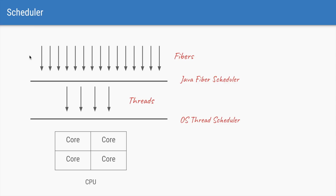Using this approach, we can have a huge number of Java Fibers that are very lightweight. It is the responsibility of the Java Fiber scheduler to find a free thread and mount a particular fiber on it. As soon as there is a blocking operation, the scheduler unmounts that fiber and finds another fiber to mount on the thread, creating one more layer of abstraction to efficiently use threads.